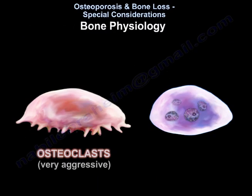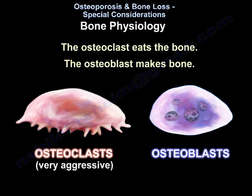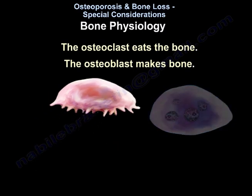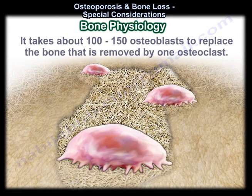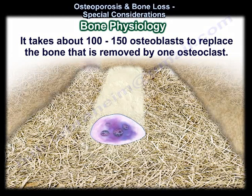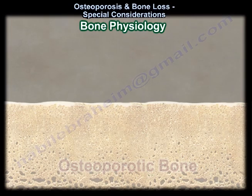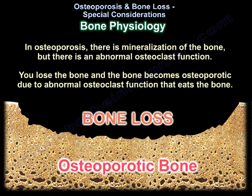A brief summary of bone physiology: the bone has two important cells, the osteoclast and the osteoblast. The osteoclast eats the bone; the osteoblast makes bone. It takes about 100 to 150 osteoblasts to replace the bone removed by one osteoclast. In osteoporosis, there is mineralization of the bone, but there is abnormal osteoclast function. The bone becomes osteoporotic because the overactive osteoclasts eat away the bone.